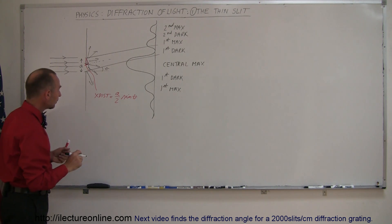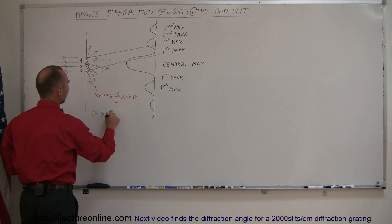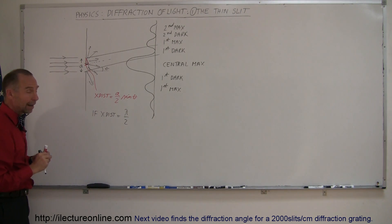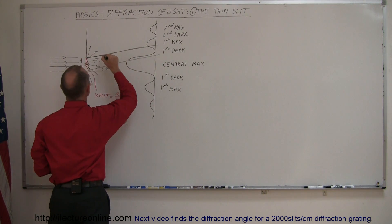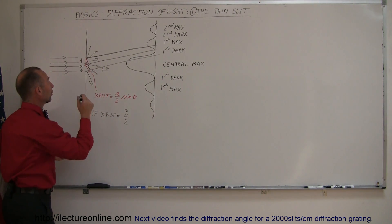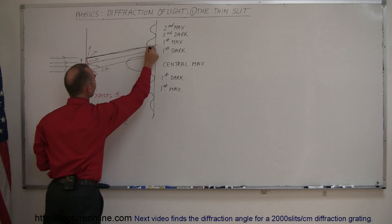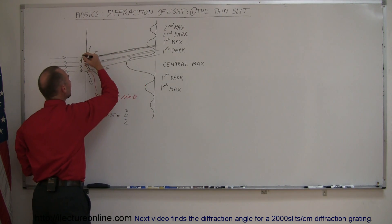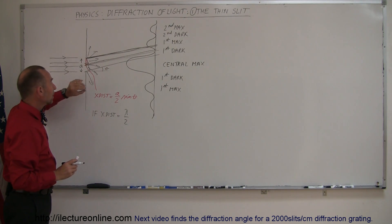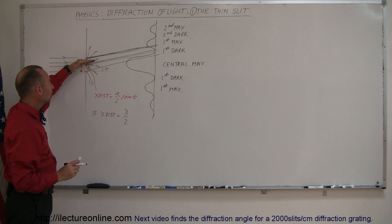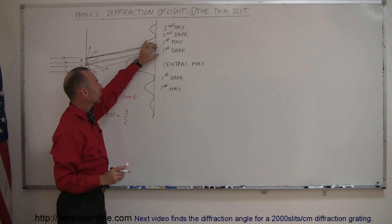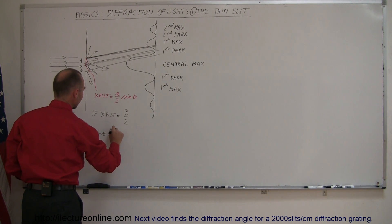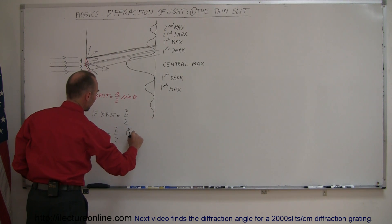If the extra distance traveled by the ray in the middle of the beam compared to the ray at the very top equals half a wavelength, then those two rays will be out of phase by half a wavelength. So the very top ray will destructively interfere with the ray right in the middle of the beam. The ray just below that will also destructively interfere with the ray just below the middle, and so on — every ray in the top half has a corresponding ray in the bottom half exactly half a wavelength out of phase. The first half completely destructively interferes with the second half, and you'll see a dark spot on the screen. That's the condition where a over 2 sine theta equals lambda over 2 — that gives the first dark spot.